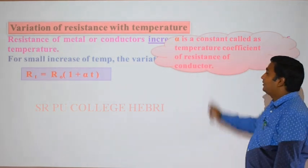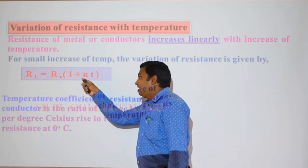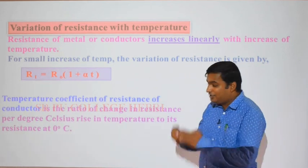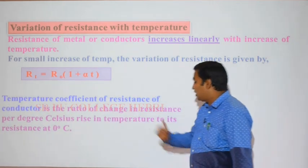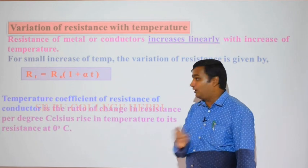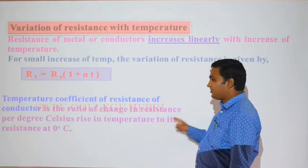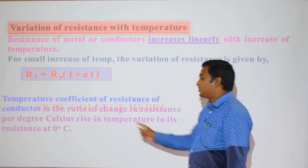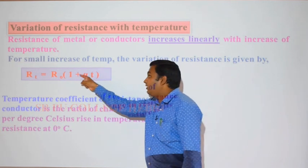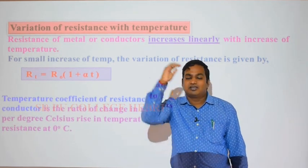Alpha is called the temperature coefficient of resistance of a conductor. Its definition is: the ratio of change in resistance per degree rise of temperature to its resistance at 0 degrees Celsius. Depending on the value of alpha, we can determine whether the resistance of a given material increases or decreases with temperature.